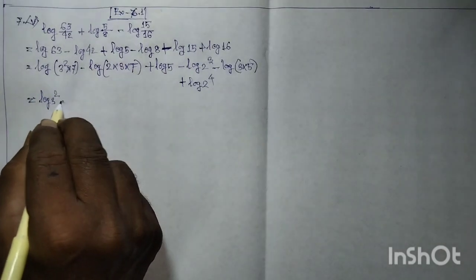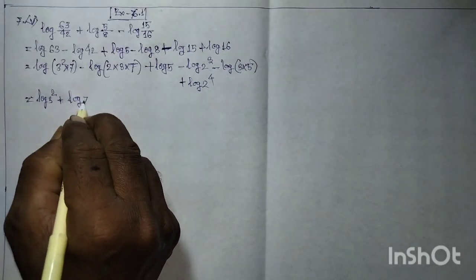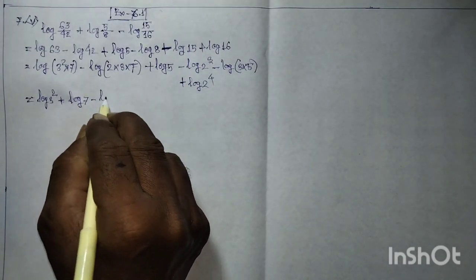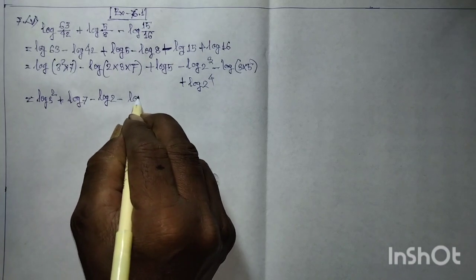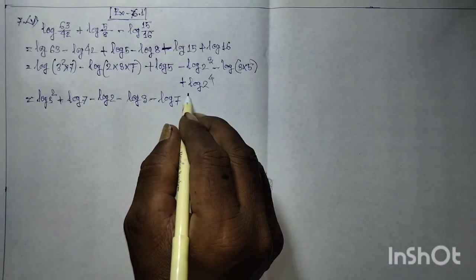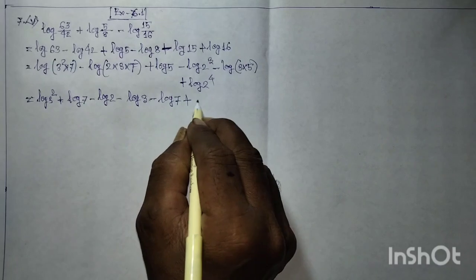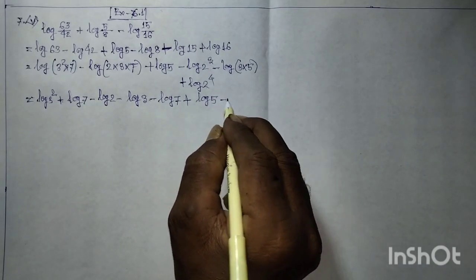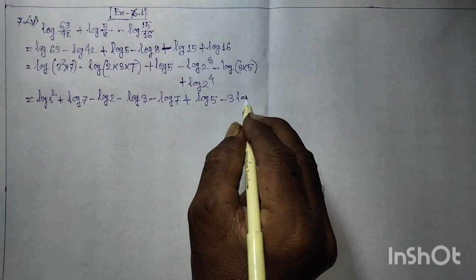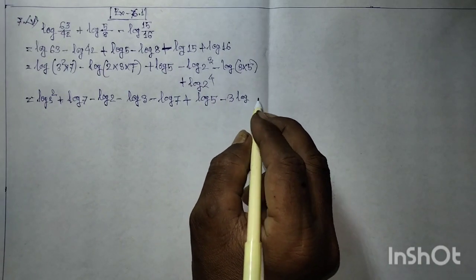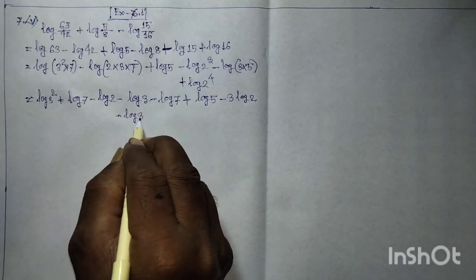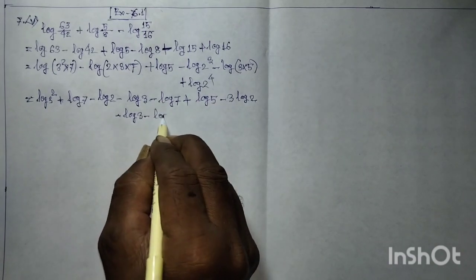Expanding further: 2·log 3 plus log 7 minus log 2 minus log 3 minus log 7 plus log 5 minus 3·log 2 minus log 3 minus log 5 plus 4·log 2.